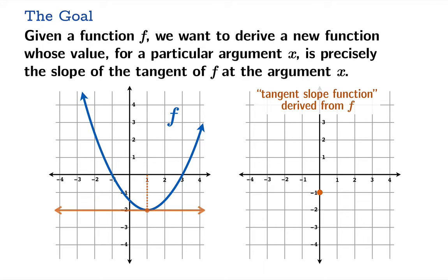And now you can just, in this example, keep looking at different arguments. So suppose the tangent slope at the argument 1 is 0. Then we want the value of this tangent slope function to be 0 at the argument 1 and so on.